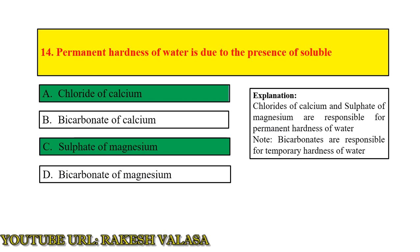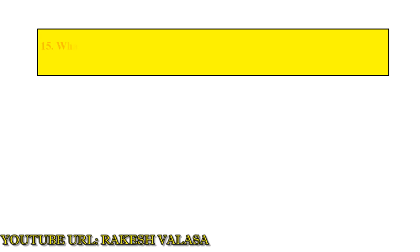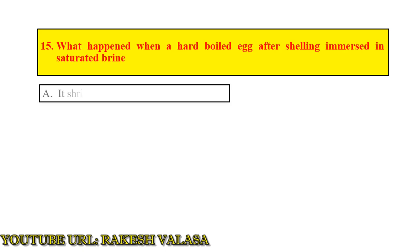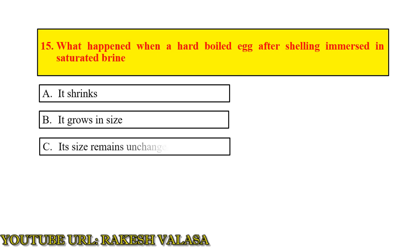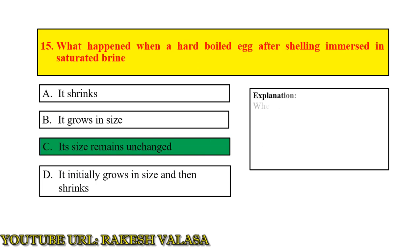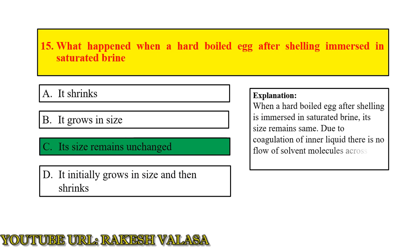Question number 15: what happens when a hot boiled egg, after shelling, is immersed in saturated brine? Answer: its size remains unchanged. Explanation: when a hot boiled egg after shelling is immersed in saturated brine, its size remains the same due to coagulation of the inner liquid. There is no flow of solvent molecules across the membrane.